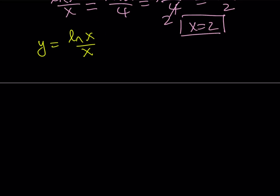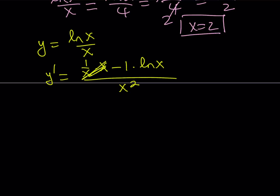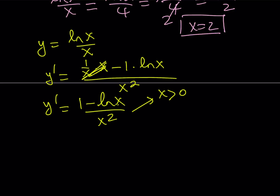Let's differentiate y equals ln x over x using the quotient rule. We get (1/x · x minus 1 · ln x) all over x squared, which simplifies to (1 minus ln x) over x squared. Since x squared cannot be negative: if x is greater than e, the numerator is negative so y prime is less than 0. If x is less than e, ln x is less than 1 and y prime is greater than 0.